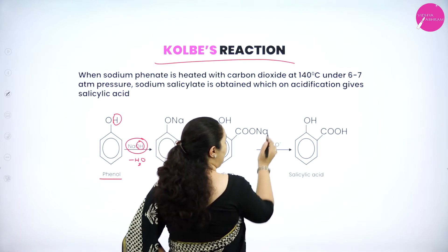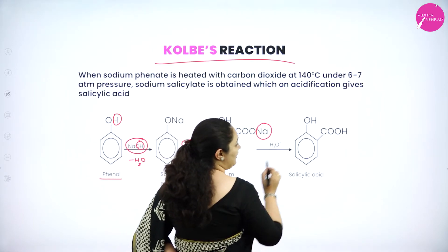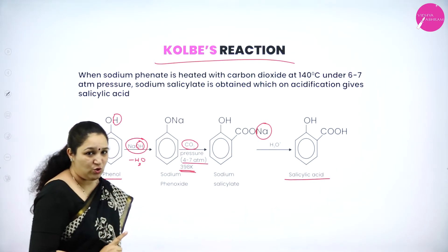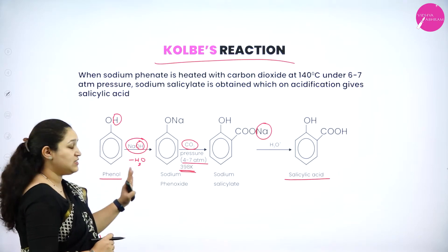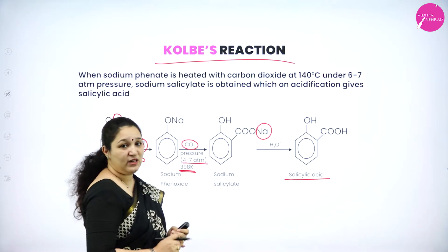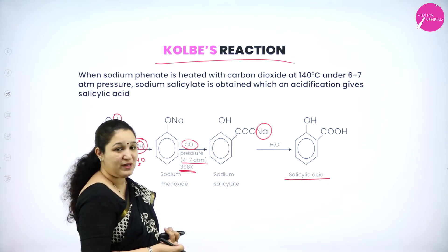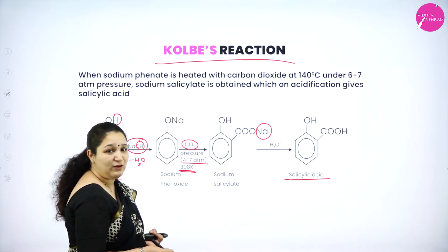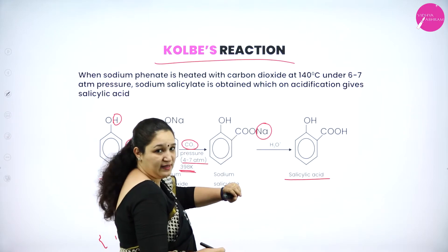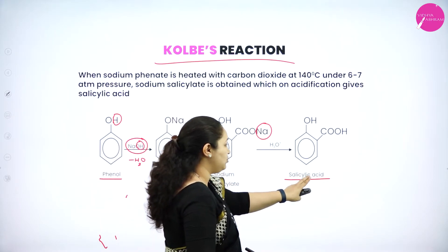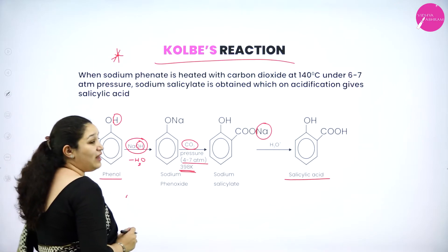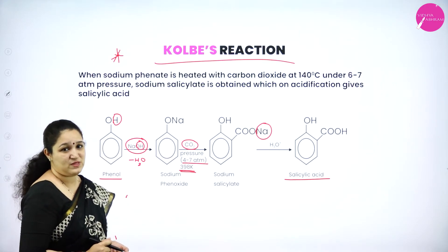Further, sodium salicylate is acidified to replace the sodium atom with hydrogen to give salicylic acid. So in the Kolbe-Schmitt reaction: phenol is treated with NaOH to get sodium phenoxide; sodium phenoxide is treated with CO2 under 4 to 7 atmospheric pressure at 140°C to give sodium salicylate (with OH and COONa groups); further acidification gives salicylic acid. This is an important name reaction and is asked several times in exams.